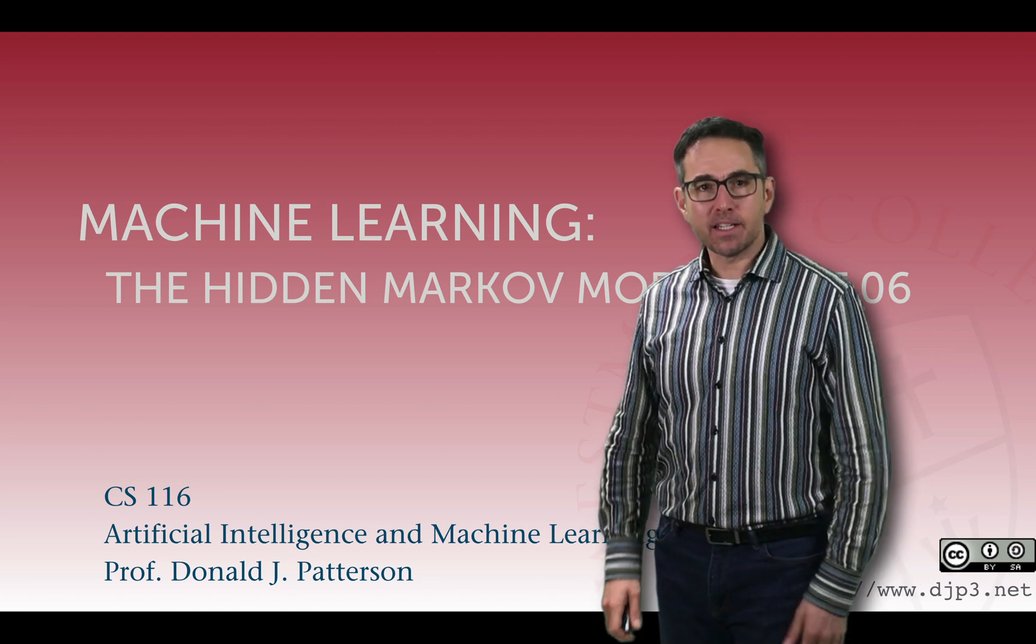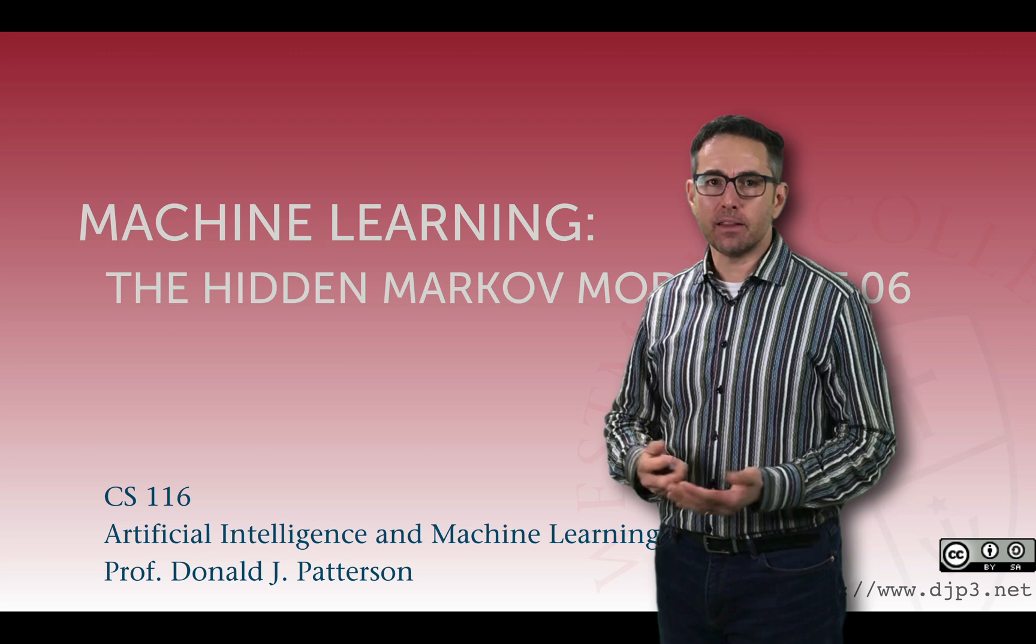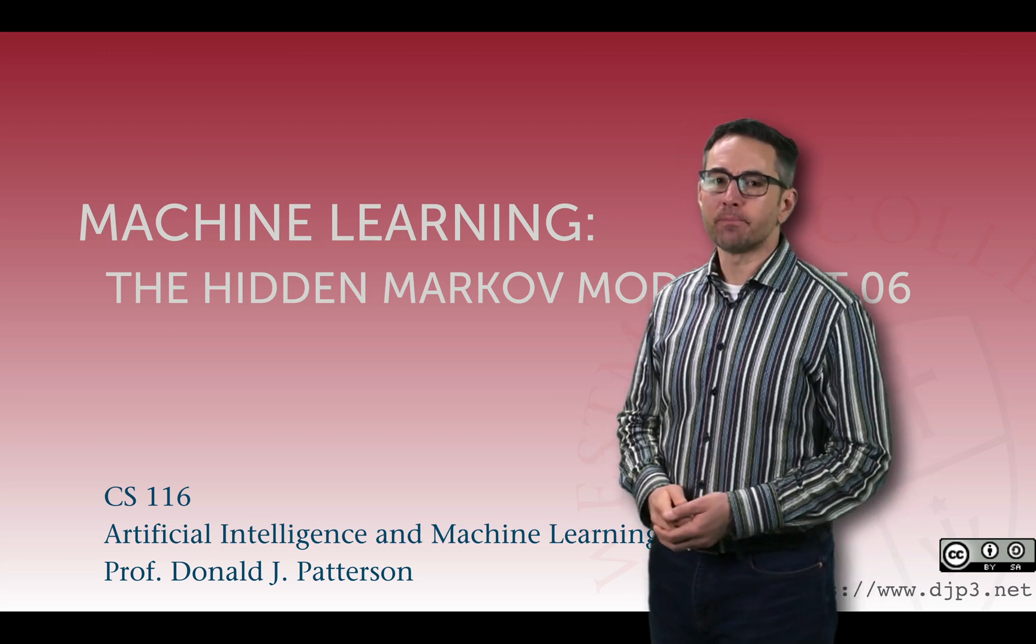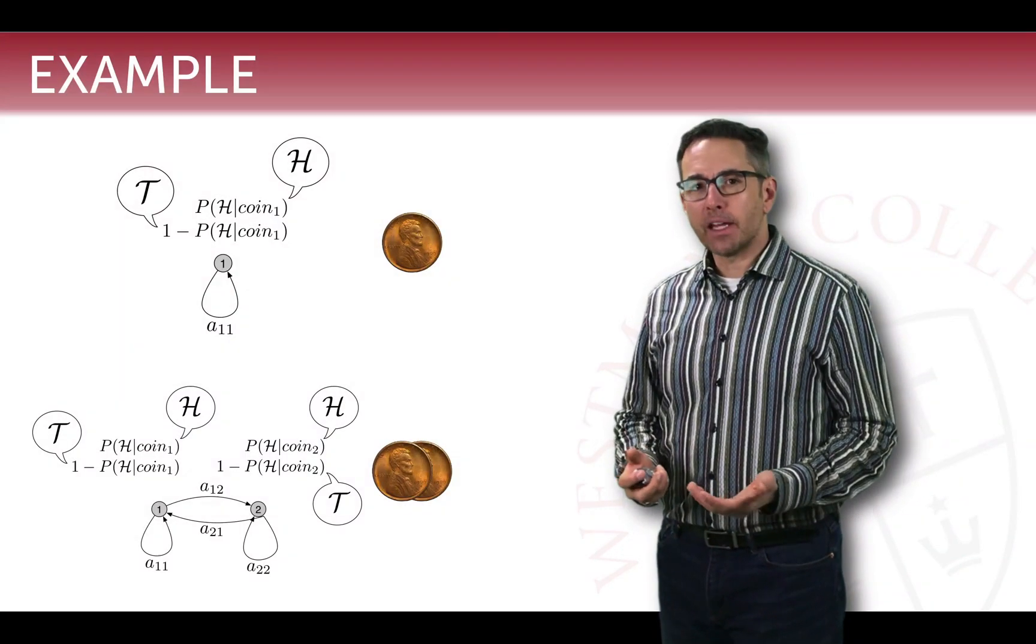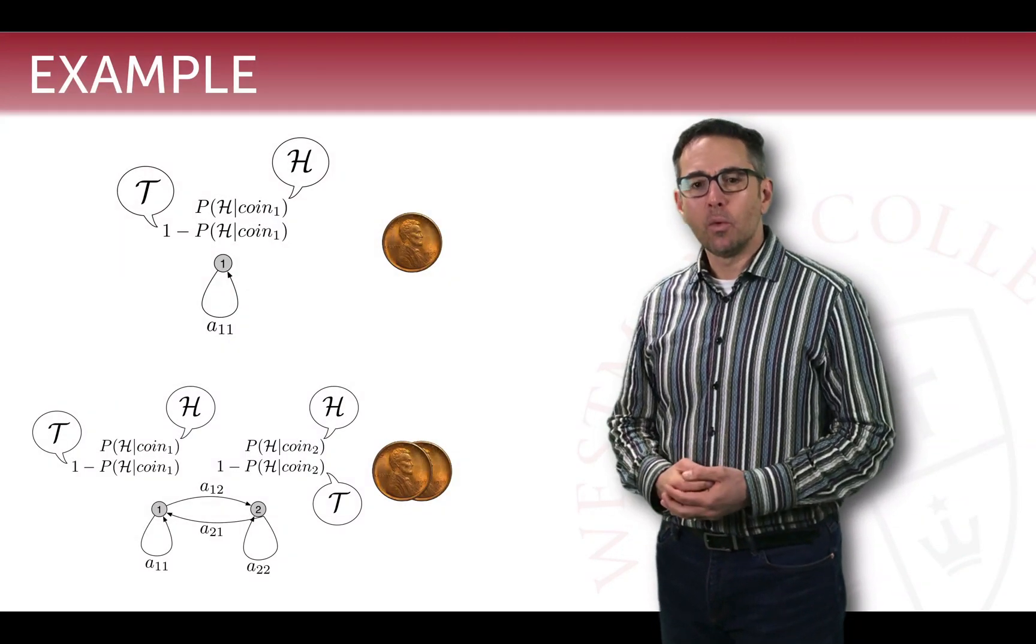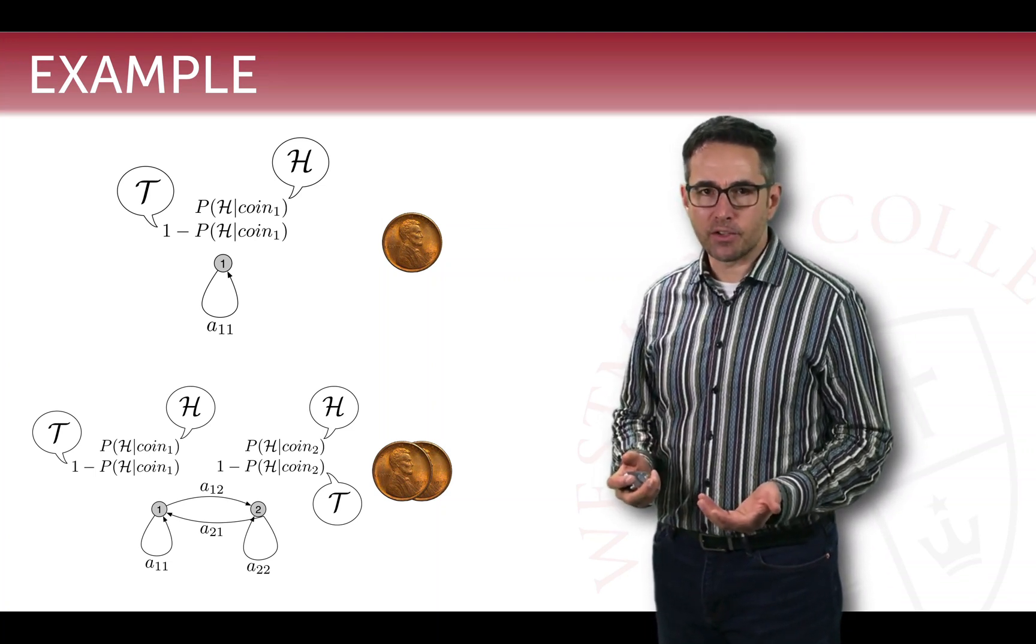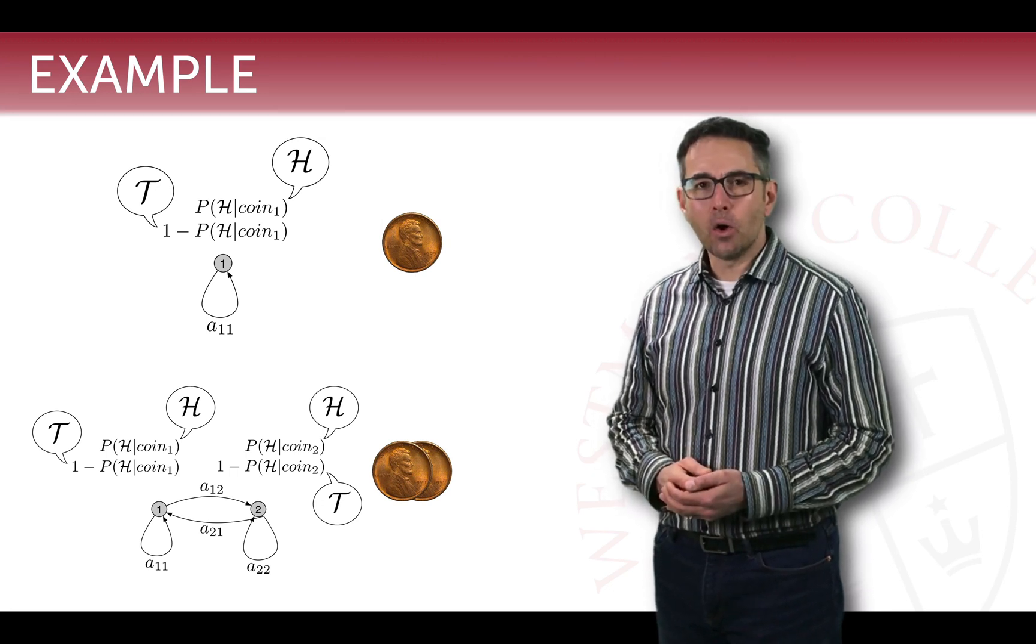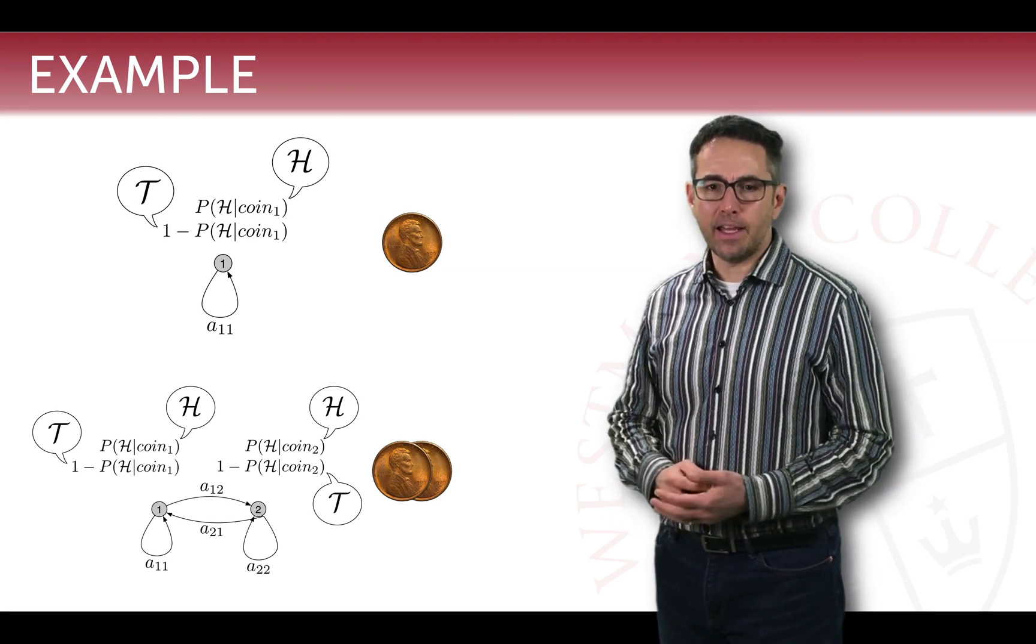Welcome to lecture six in a sequence of lectures about the hidden Markov model, where we're understanding the representation and reasoning that can be done with the hidden Markov model. In the previous lecture, we looked at a way in which we could represent coin flips behind a curtain with several different state models that had different numbers of unknown parameters associated with them and that are equally good for understanding whether a coin being flipped behind a curtain is landing on heads or tails.